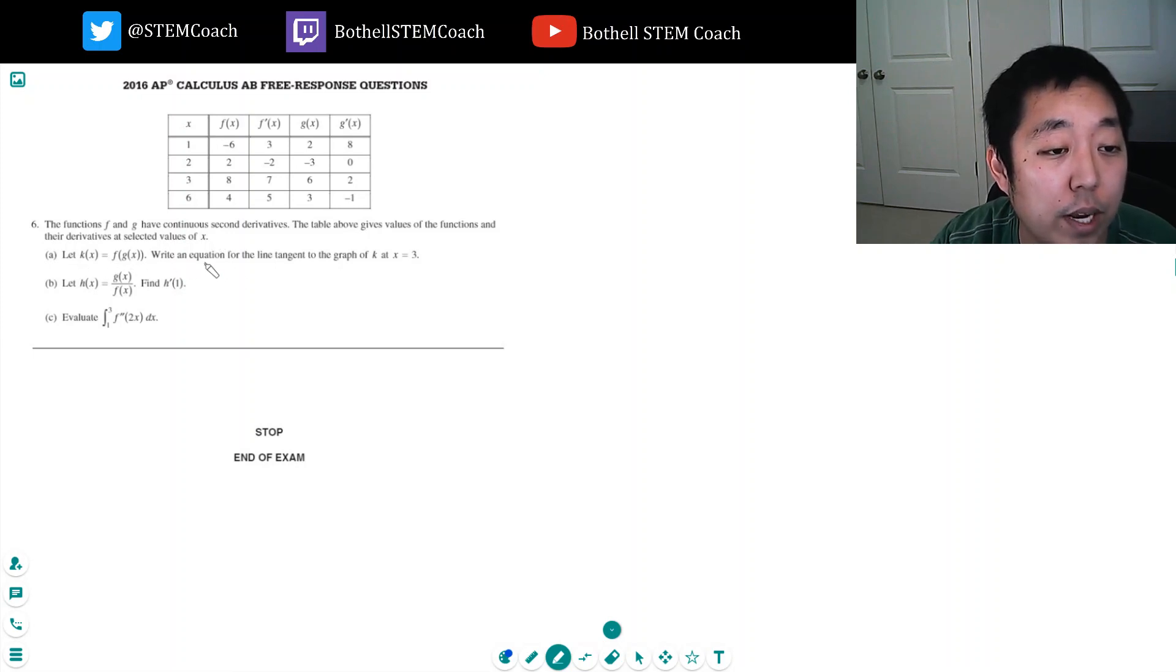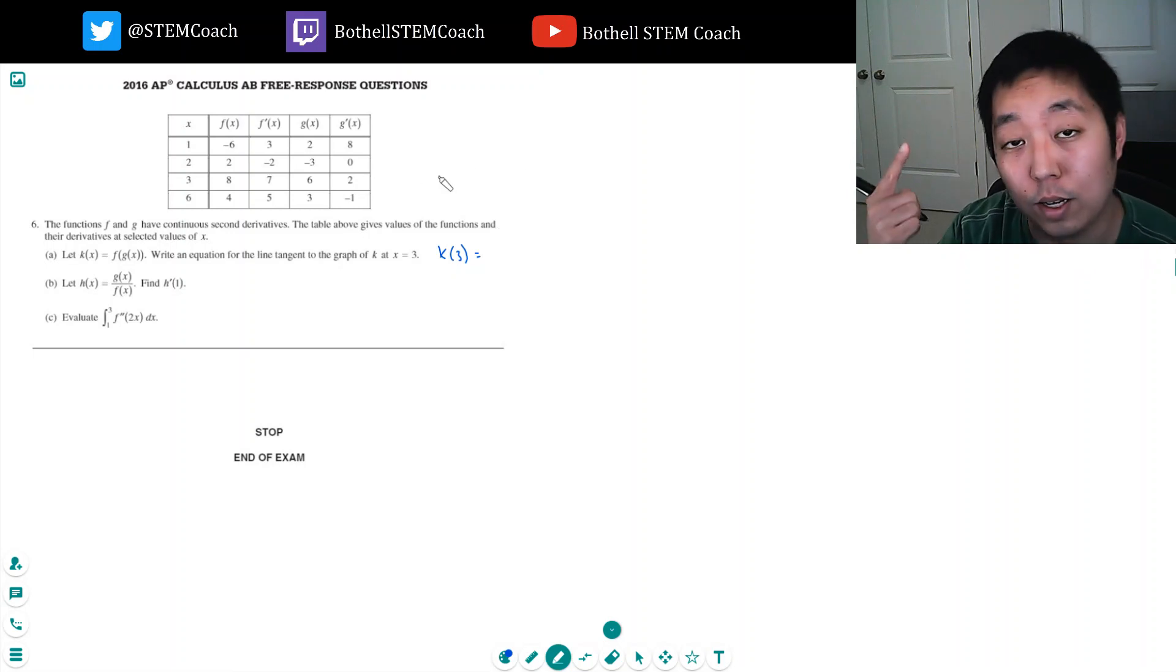Write an equation of the line tangent to the graph of k at x equals 3. First I want to know what k of 3 is, that gives me a point. To have an equation for a line tangent I always need the point and I need the slope.